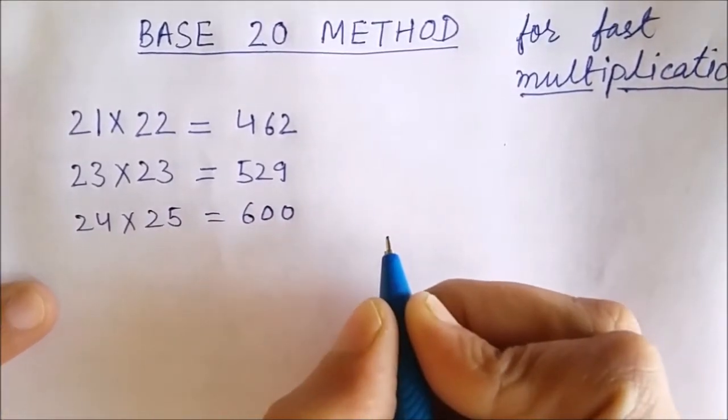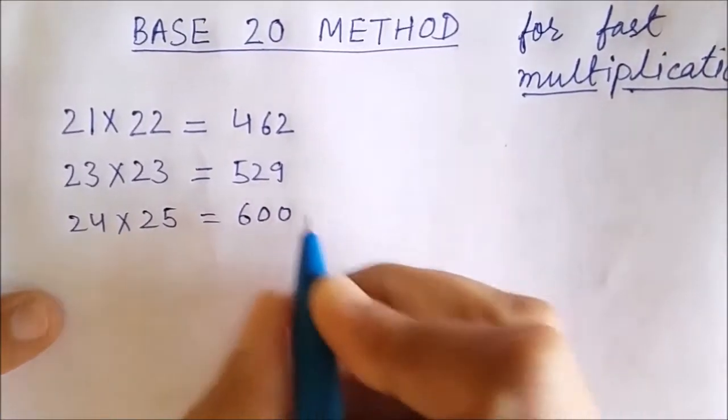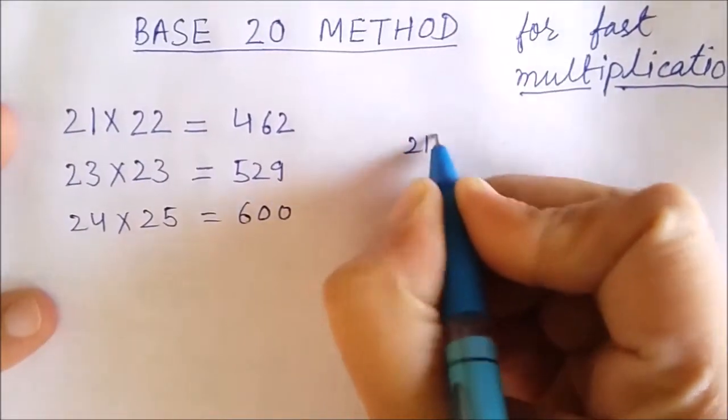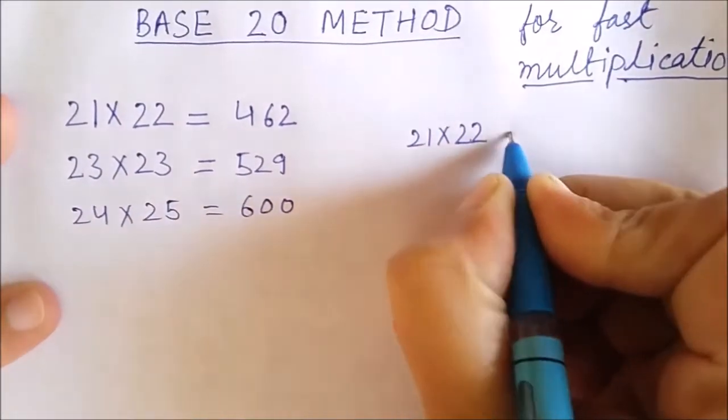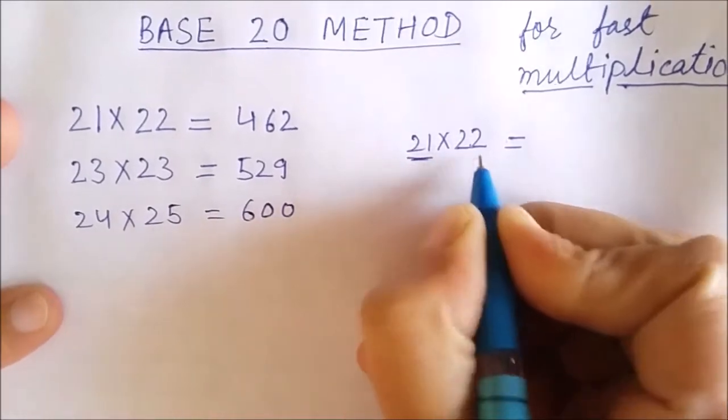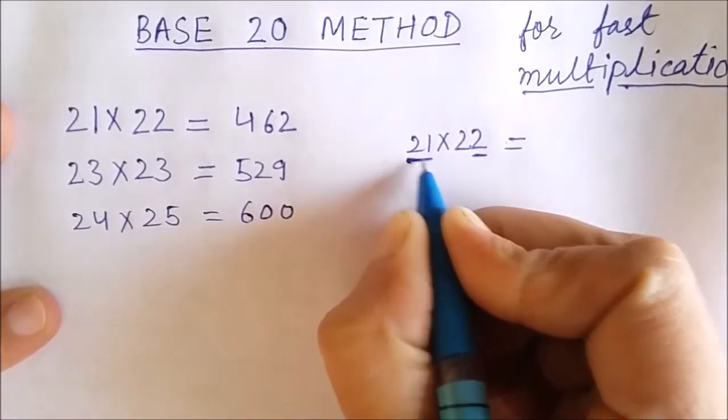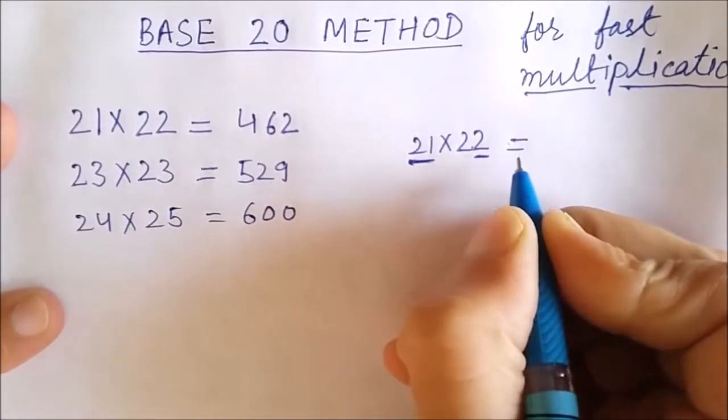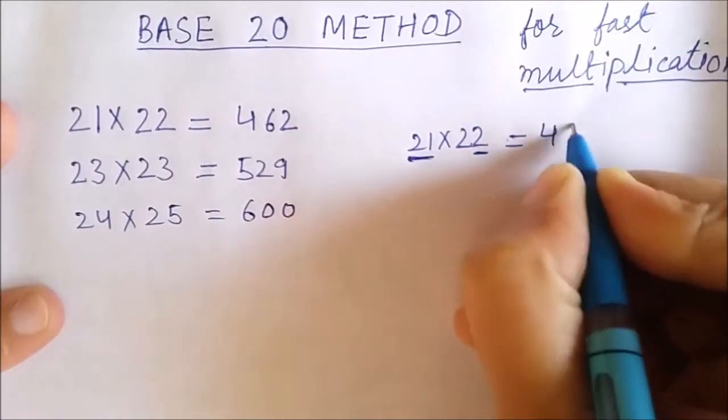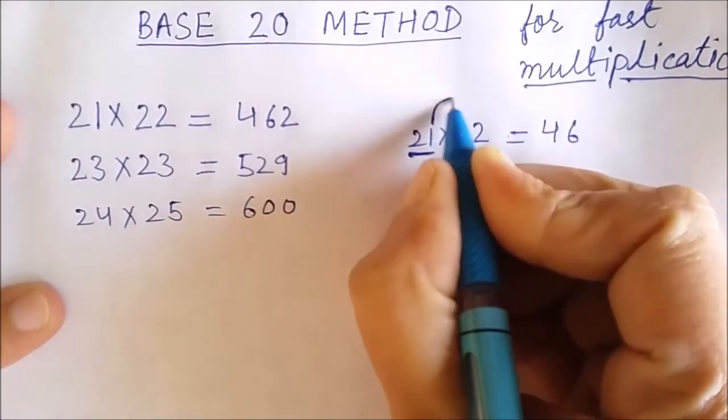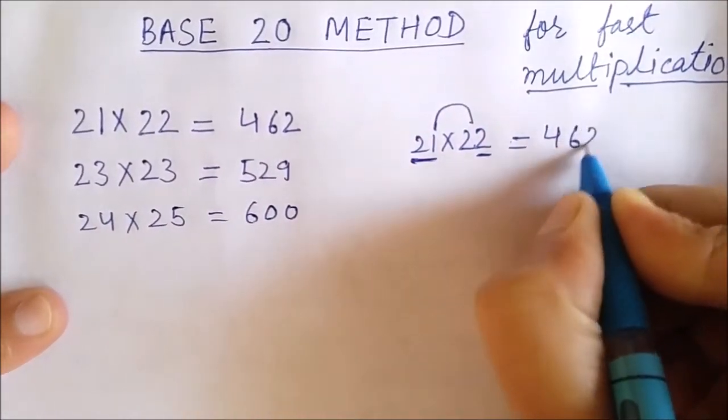This is not a magic. You can also do this. Let me tell you the trick. For 21 multiplied by 22, what I did? I just added this 2 to this 21. I got 23. I just doubled that number. This is 46. Then multiplied the units digit together. It is 2.